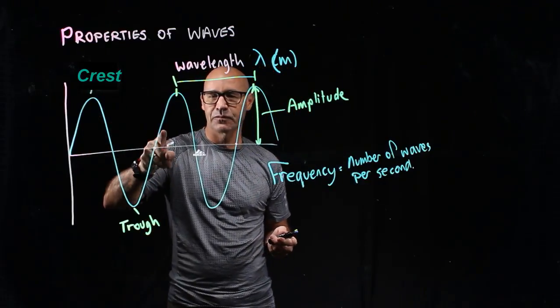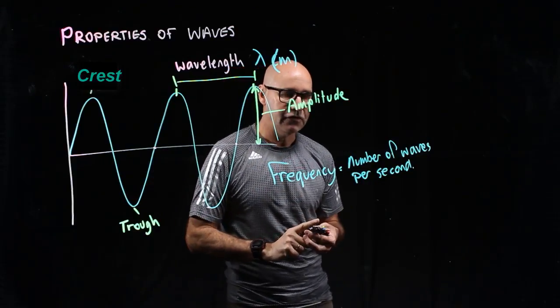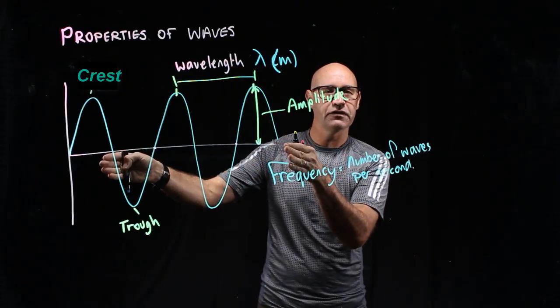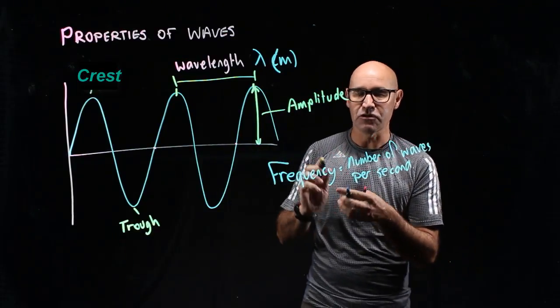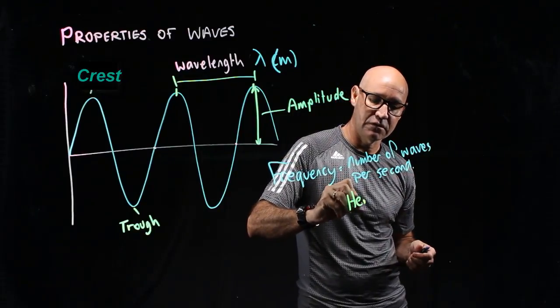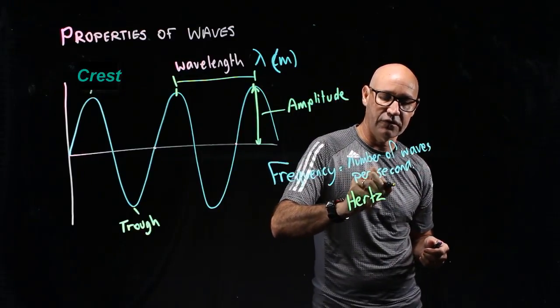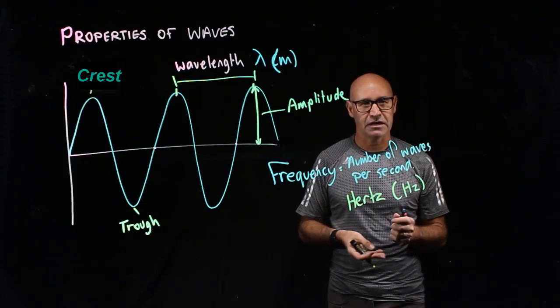That's one wave, that's two waves, and that's two and a half waves. So two and a half waves in one second means it's got a frequency of 2.5. The unit of measure for frequency is hertz, and it's a measure of the number of waves per second.